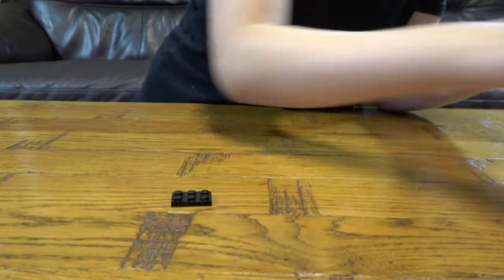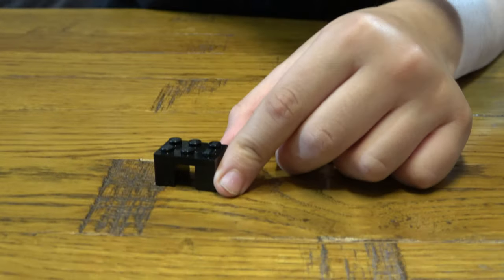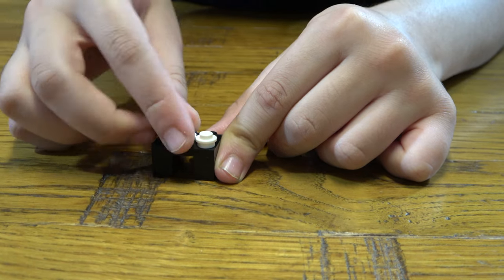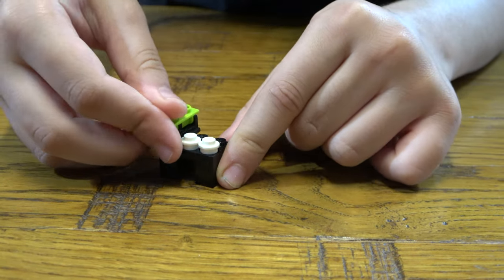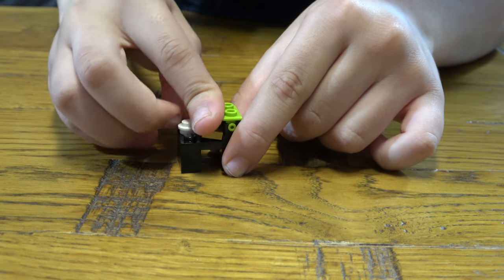The first thing we need to do is get these two pieces. We place this here, we get two of these here like this, we place this here, then we place this here.